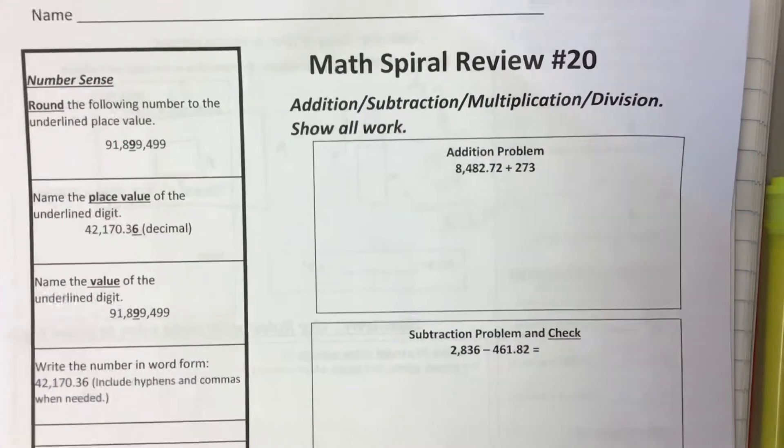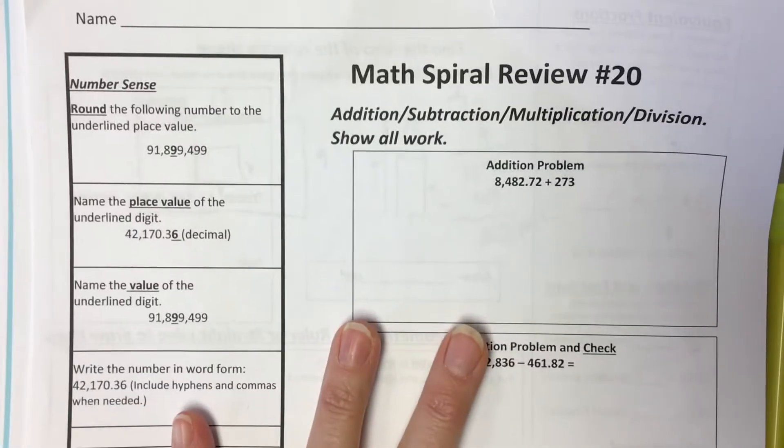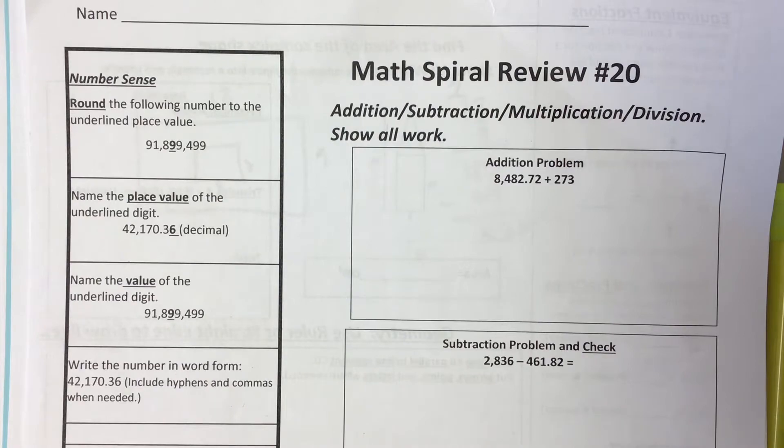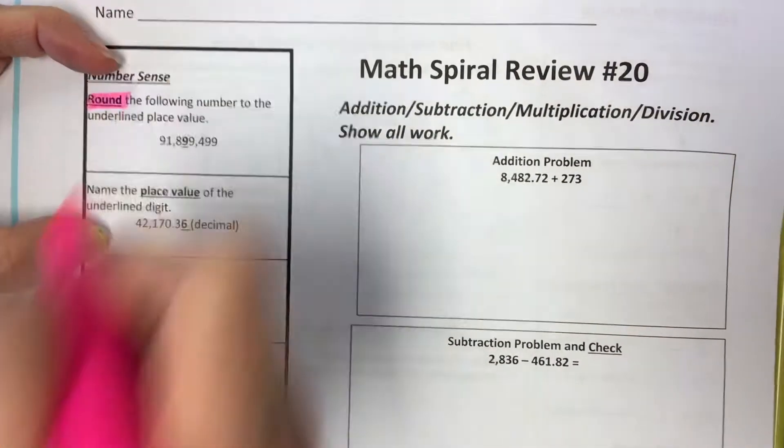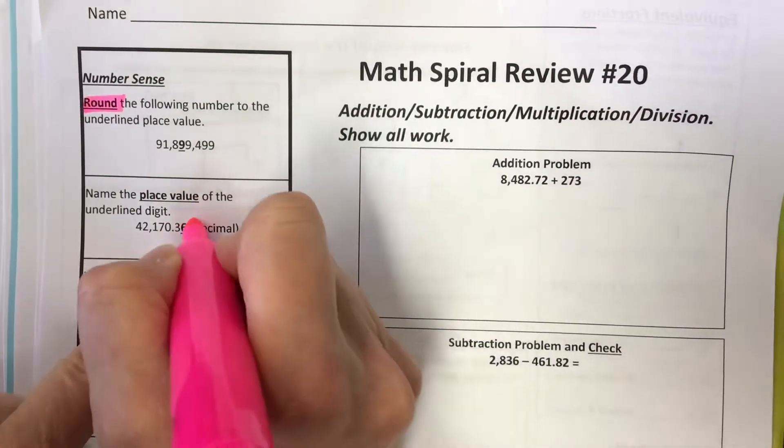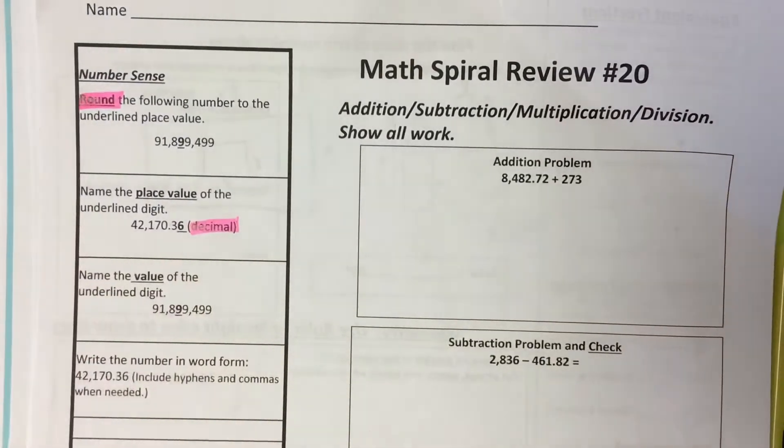Okay, boys and girls, let's look at the directions. You should have a highlighter and a pencil or pen to write with. The first one is rounding, so please make sure that you round to that underlined digit. The second one is also rounding. Don't forget that there's a decimal point there.